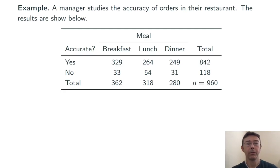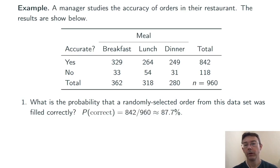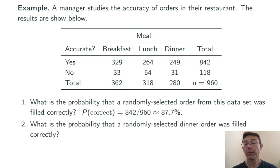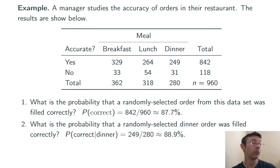Let's conclude with one more example using a table. A manager studies the accuracy of orders in their restaurant, looking at 960 orders for different meals at different times of day, and considers whether the customer got exactly what they ordered. Question one: what's the probability that a randomly selected order was filled correctly? There are 842 correctly filled orders out of 960 total, so 842 divided by 960 gives 87.7%. Question two: what's the probability that a randomly selected dinner order was filled correctly? Looking only at the dinner column, 249 divided by 280 — the correctly filled dinner orders over total dinner orders — gives 88.9%.